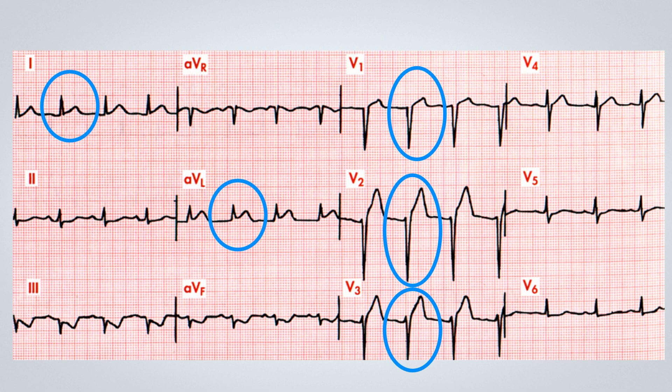Along with this, when we have localized elevation in a specific wall — in this case, the anterolateral wall — we usually see depression in the opposite wall, as if it were a mirror image, when it results from ischemia rather than early repolarization or another cause. What can we observe in the inferior wall? We see an elevation in the anterolateral wall and a depression in the inferior wall. Thus, this ECG strongly suggests an acute myocardial infarction.